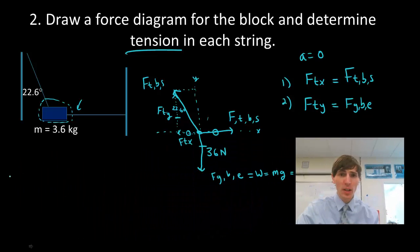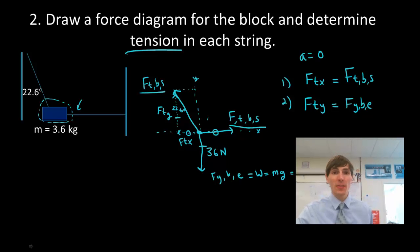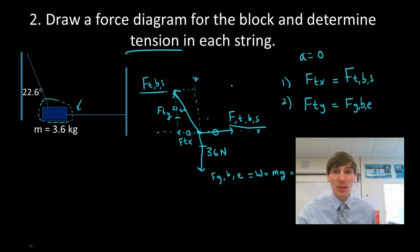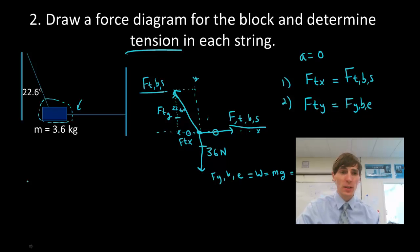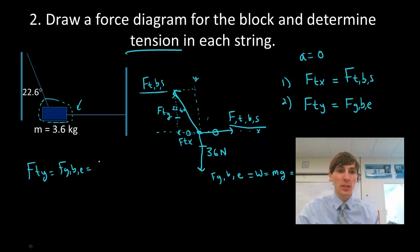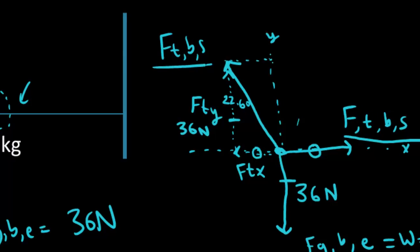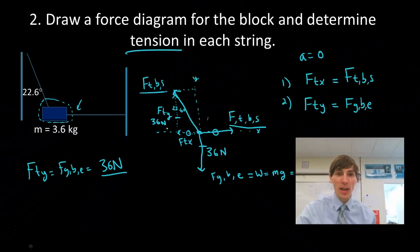We're going to start with the simplest one. Ultimately I need to find the two forces of tension. The force of tension y equals the force of gravity on the block by the Earth, which I know is 36 newtons. So FTY equals 36 newtons — I've solved for a piece of that. Now I have a side of this little triangle, along with the angle of 22.6 degrees, and I can use trig functions.